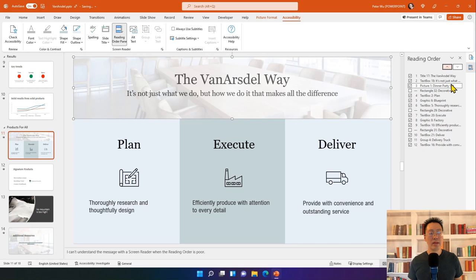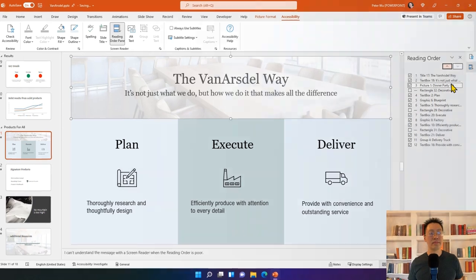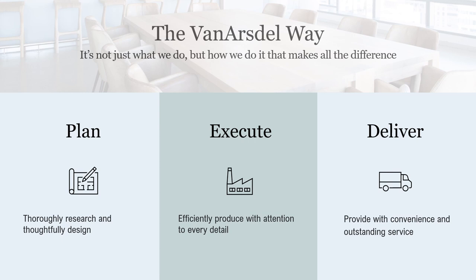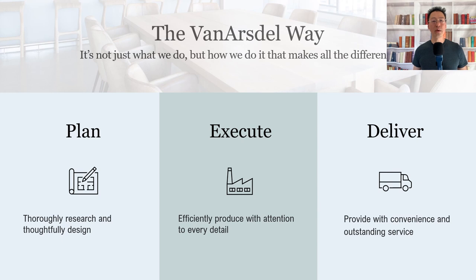Now let's hear that slide in the screen reader with the corrected order: 'Slide 11 of Anarsdale Way. It's not just what we do, but how we do it that makes all the difference. Dinner party set image. Plan — blueprint image — thoroughly research and thoughtfully design. Execute — factory image — efficiently produce with attention to every detail. Deliver — delivery truck group — provide with convenience and outstanding service.' With proper structure, order, and textual descriptions, the message on the slide is now easy to understand.